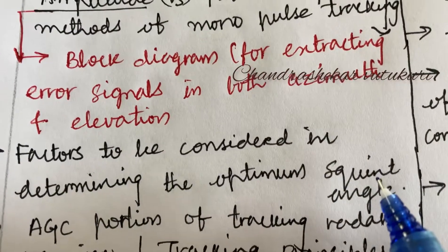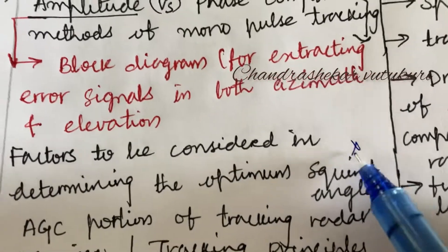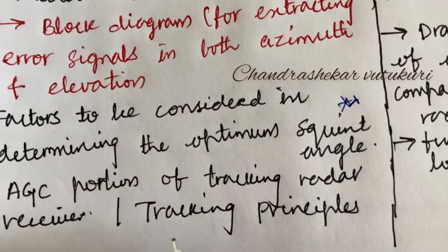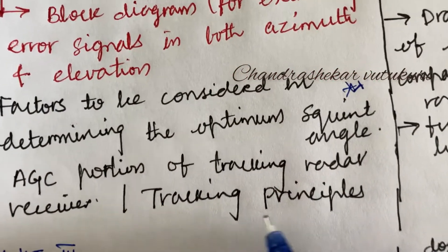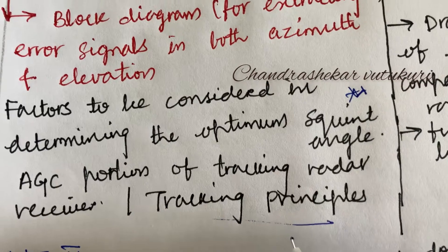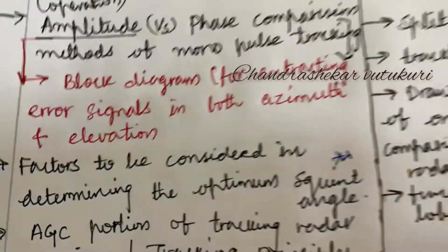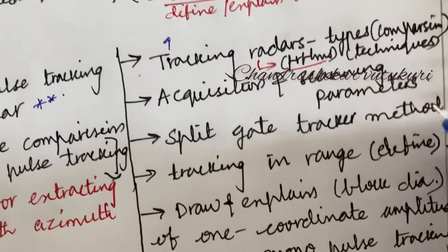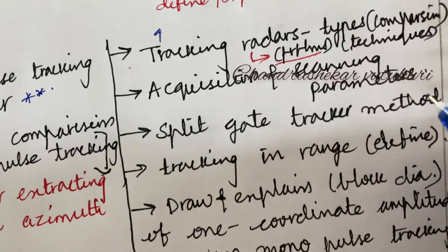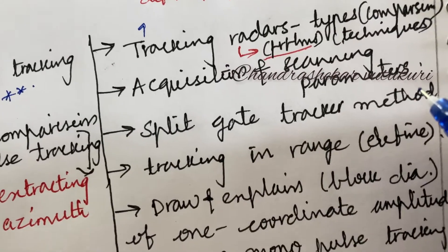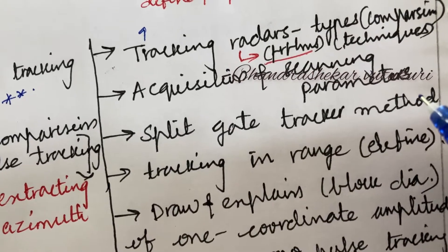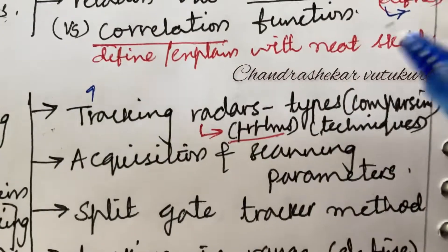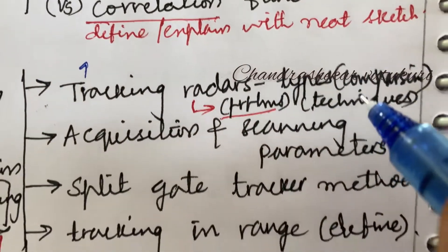Dear students, the factors to be considered in determining the optimum squint angle is said to be a top-most question. The AGC portion of the tracking receiver and tracking principles may be short questions this time. You are supposed to work out each and every parameter wherever I am highlighting so that you will be able to work out both short and long questions. The tracking radars, the problems, and the types related to tracking radars and their comparison are important.